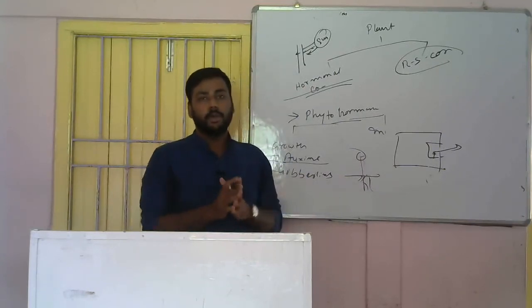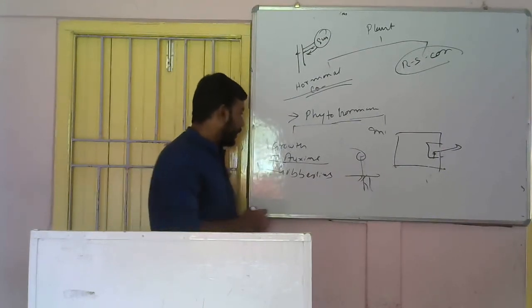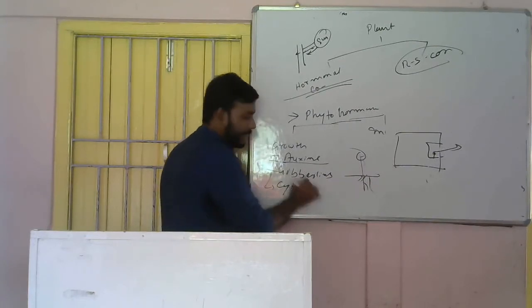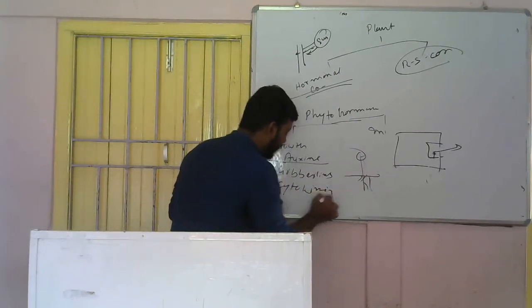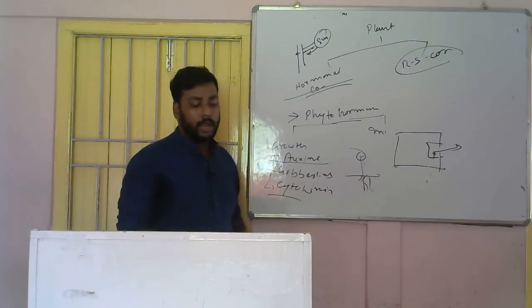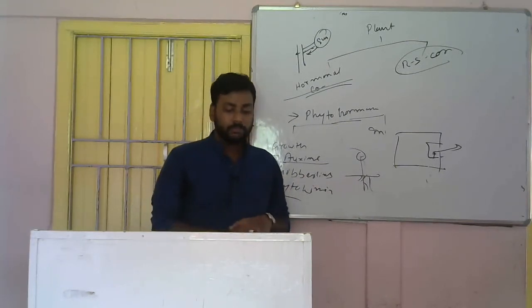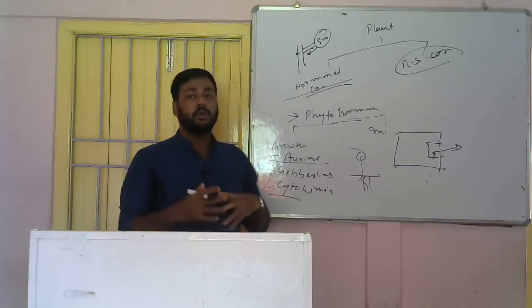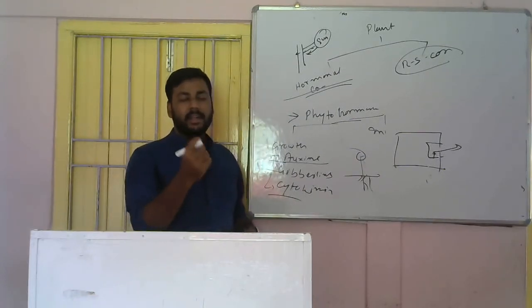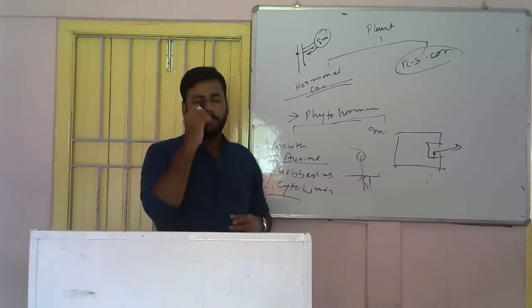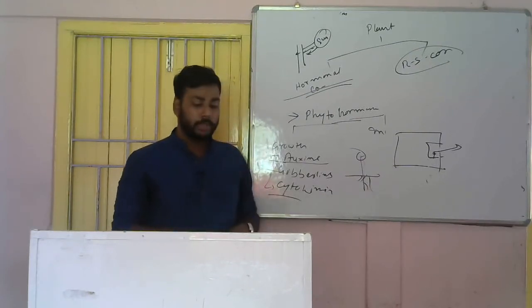The next growth-promoting hormone is cytokinin. From the name, 'cyto' relates to cell — so cytokinin helps in cell division. Cytokinin hormone helps in cell division, helps in the development of fruits and seeds, and also helps in the growth of shoots and buds. A bud is the tender, newly forming flower that is still small. So cytokinin helps in the growth of shoots and buds.